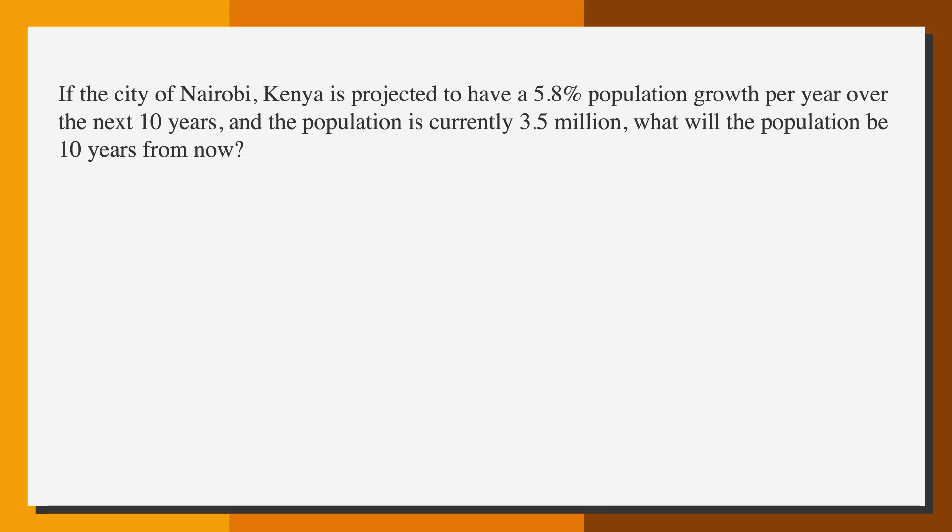If the city of Nairobi, Kenya is projected to have a 5.8% population growth per year over the next 10 years, and the population is currently 3.5 million, what will the population be 10 years from now? We're not talking about money, but let's take a look at our compound interest formula and see how we can make it work here. We can change future dollars to future population, principal to current population, interest rate to rate of growth, and the number of periods of interest to the number of years of growth, but we can keep that abbreviated with an N.